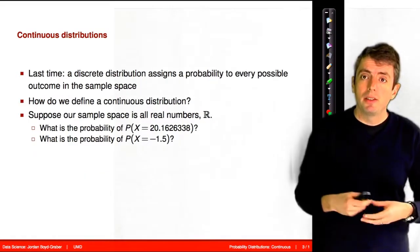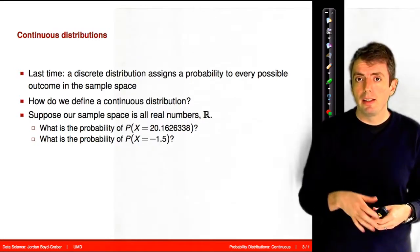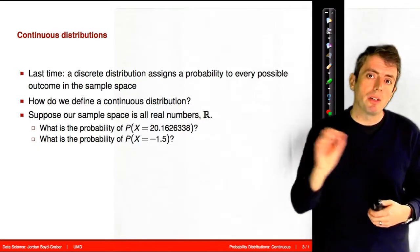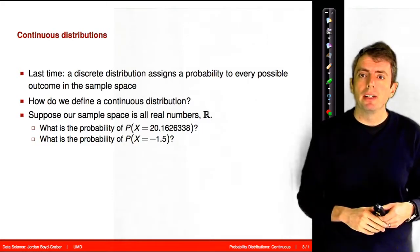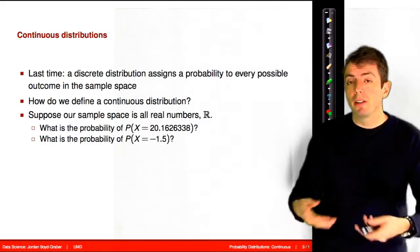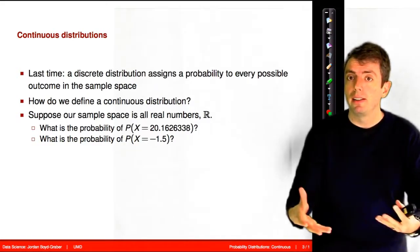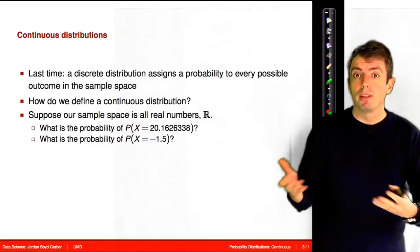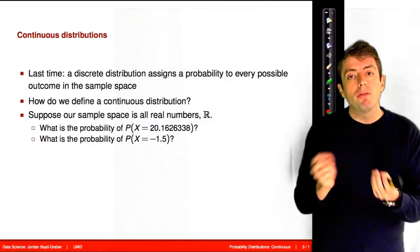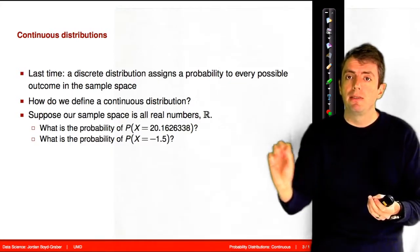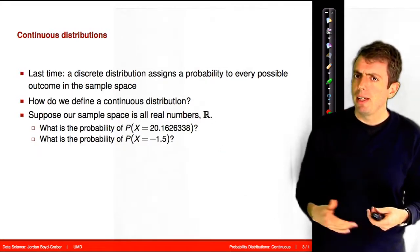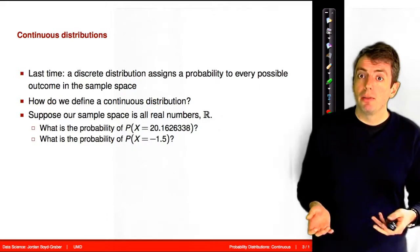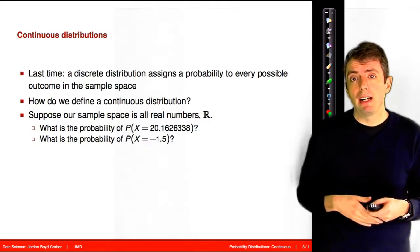In some ways, discrete distributions were a little bit easier because for every possible outcome, you could assign a probability to it. And sometimes we did that with a function. We didn't just write it down in a discrete distribution, but for example, with the Poisson distribution, we had a formula that gave us the probability of any possible natural number. And we can't do that anymore because we have uncountably infinite outcomes.